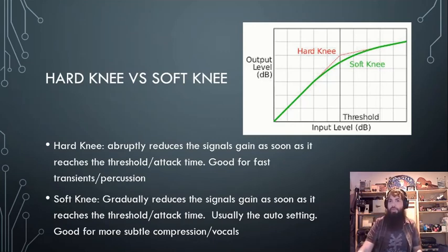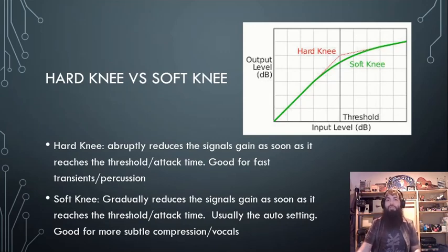Soft knee is good for more subtle compression — great for vocals and things of that nature. Hard knee is more for percussive, transient-type sounds.